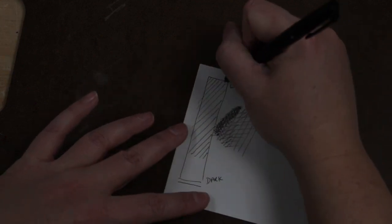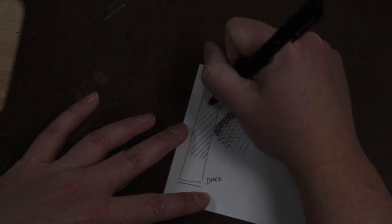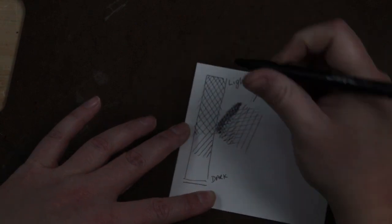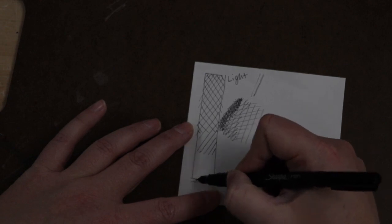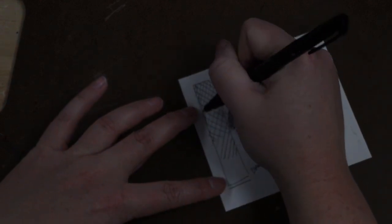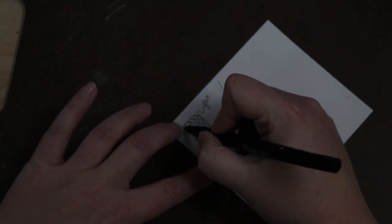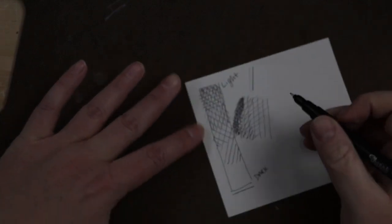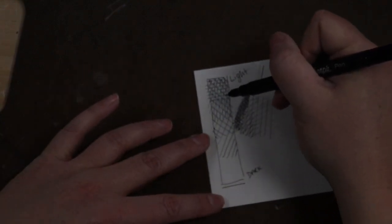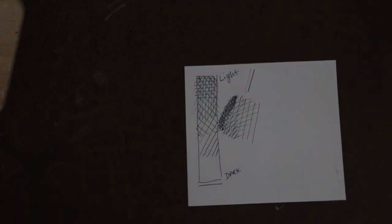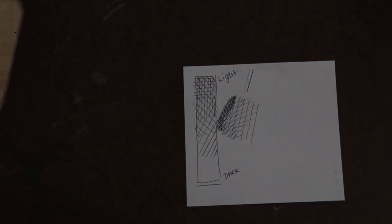So then I do another layer, but this time I won't go down quite as far. Again, a flat edge, flat edge, flat edge. I do another layer, I don't go down quite as far, still a flat edge. So now I'm creating gradients that are getting darker with each layer.